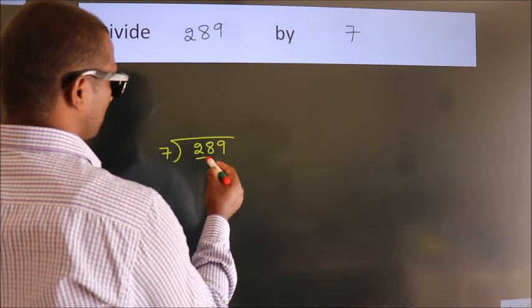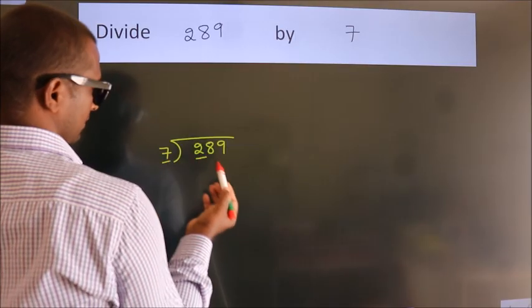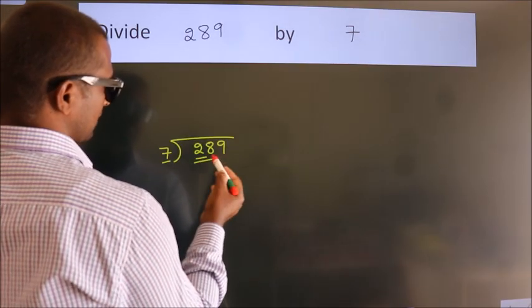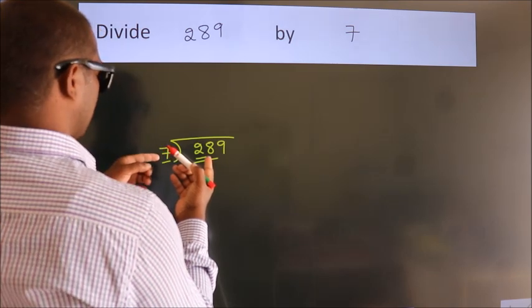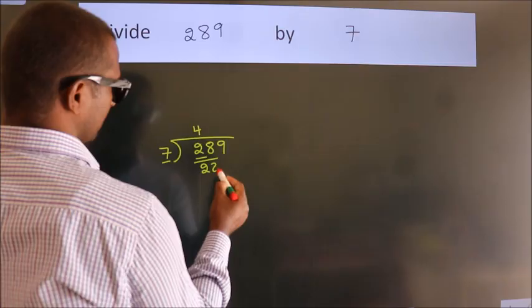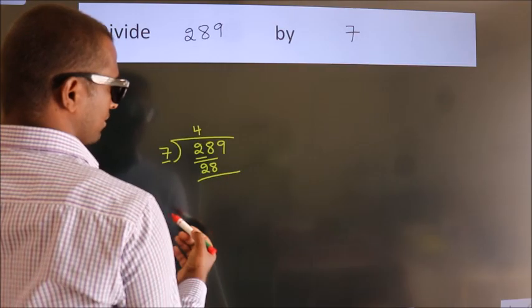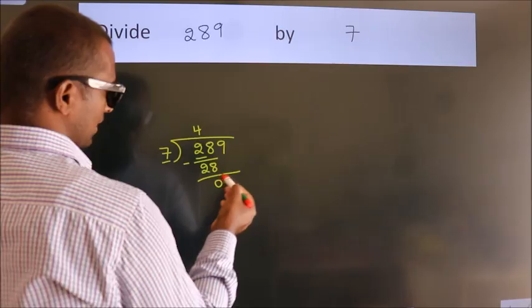Here we have 2. Here 7. 2 is smaller than 7, so we should take 2 numbers: 28. When do we get 28 in the 7 table? 7 times 4 is 28. Now we should subtract. We get 0.